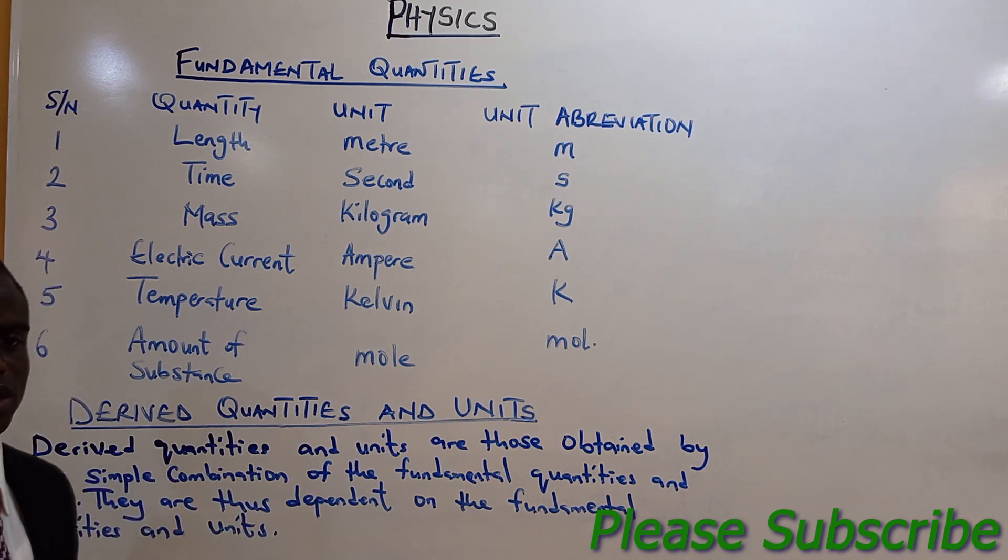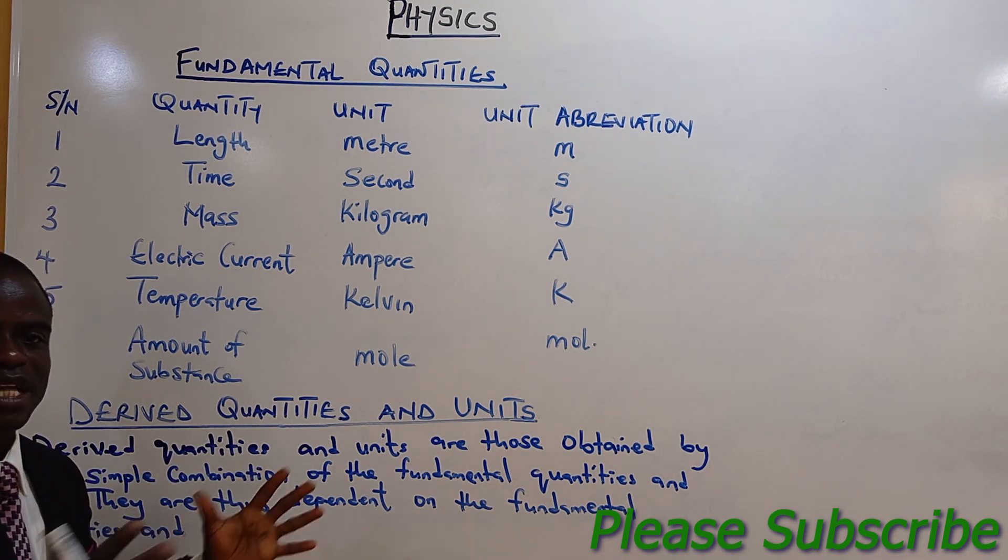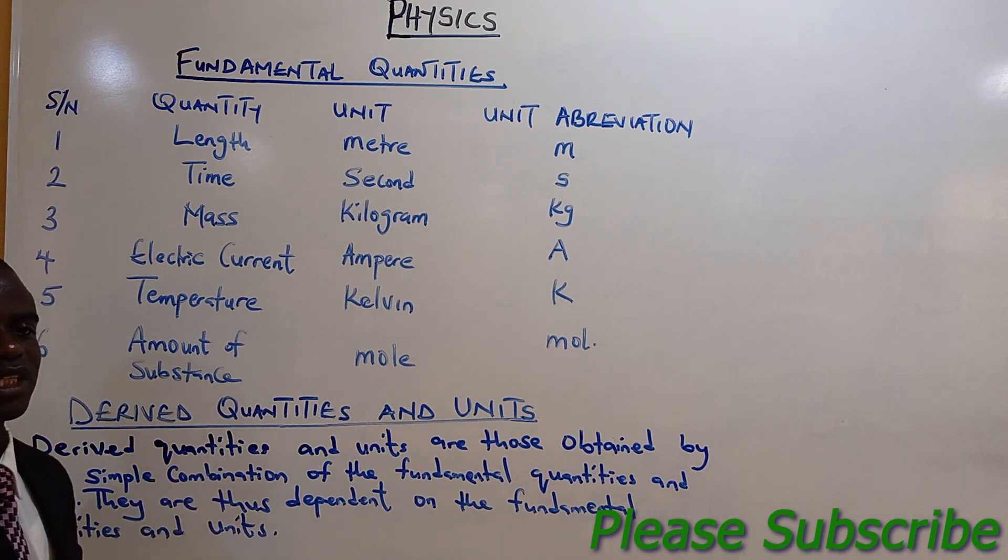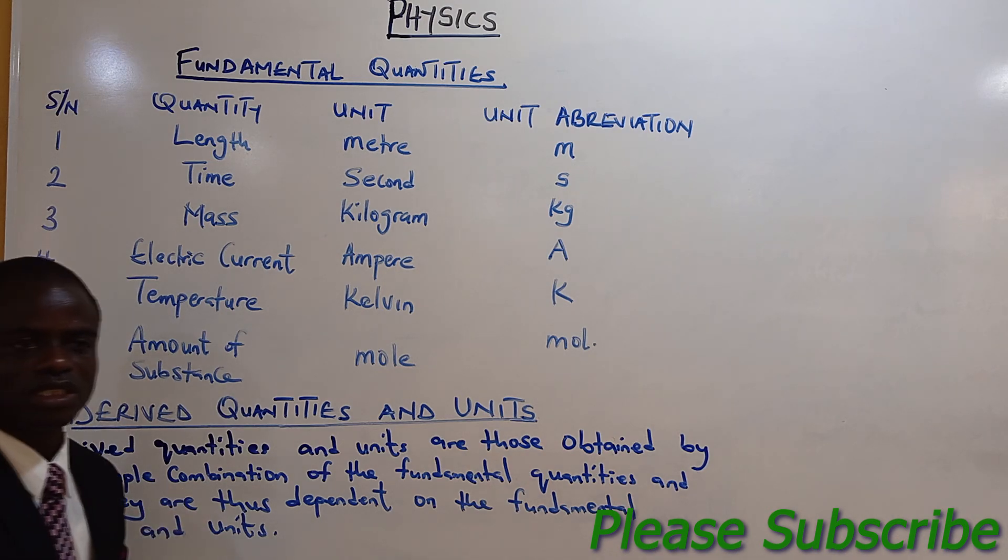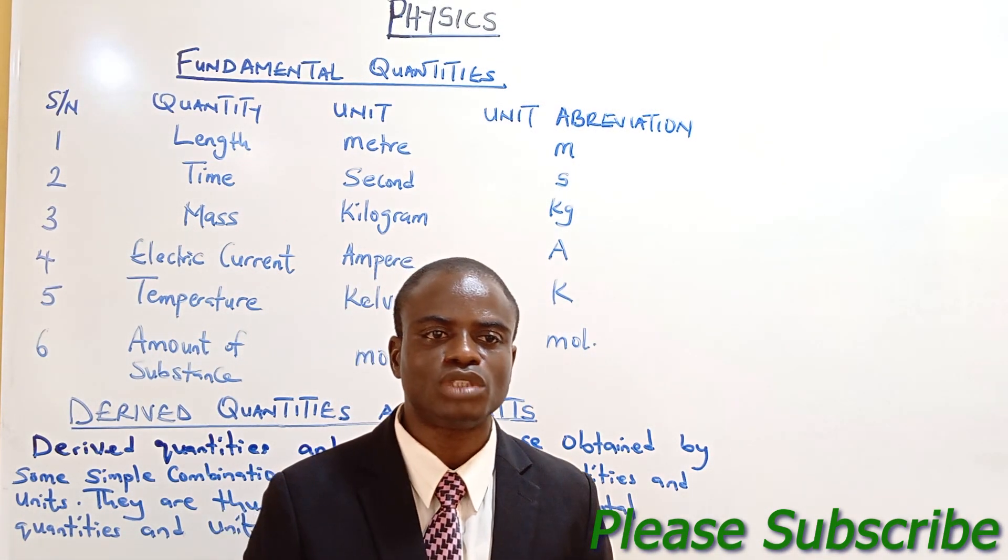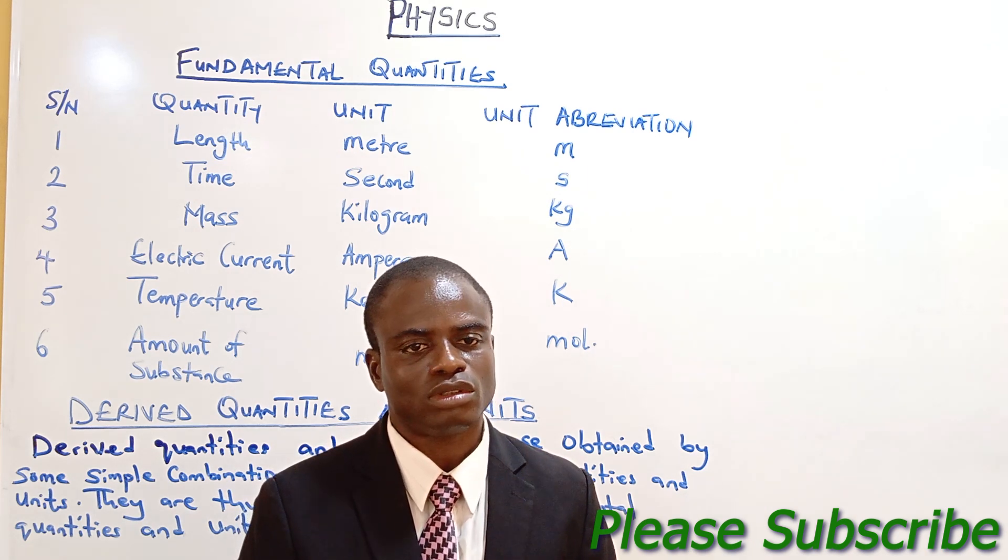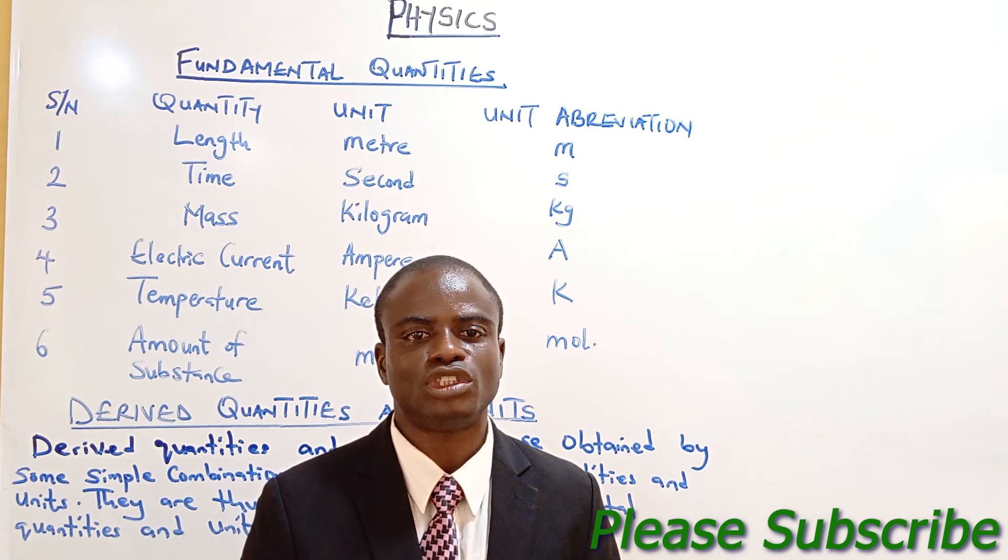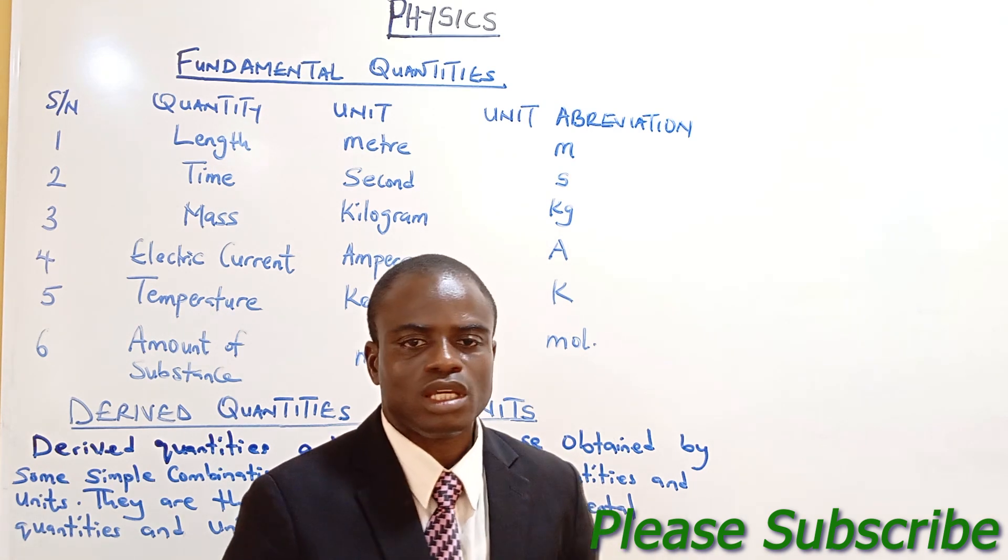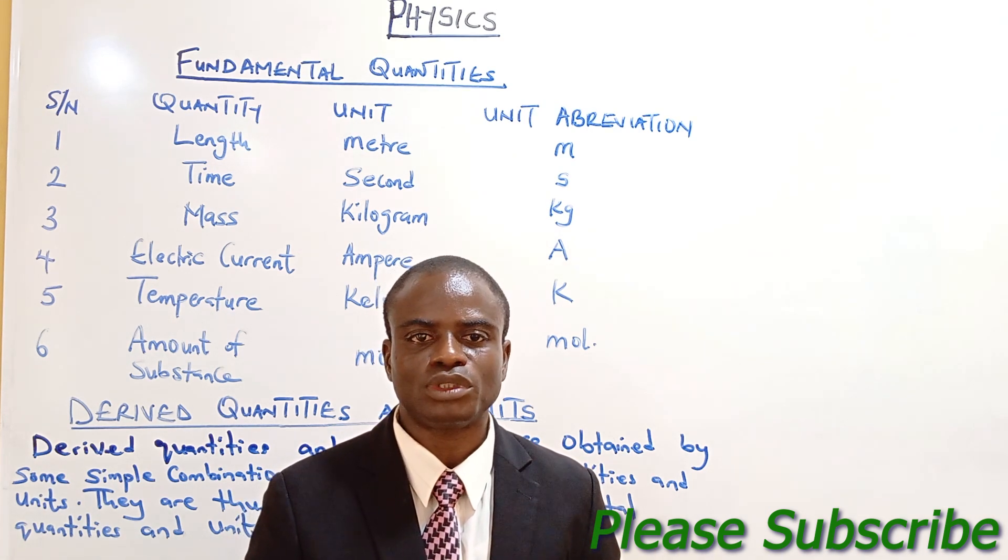Derived quantities and units are those obtained by simple combinations of the fundamental quantities and units. They are dependent on the fundamental quantities and units. Combinations of fundamental quantities and units will give us derived quantity or derived unit. We are going to see it in the examples that are written on the board now.